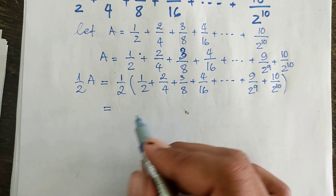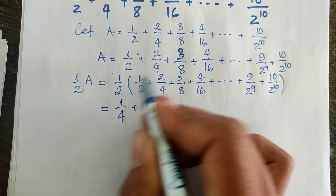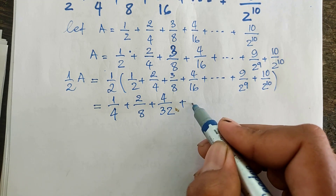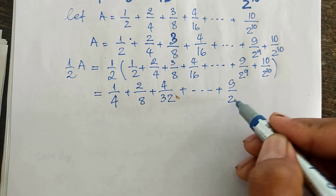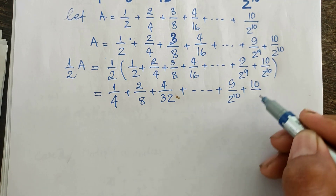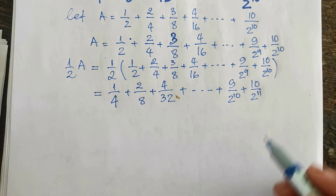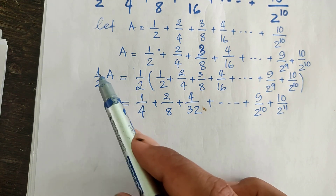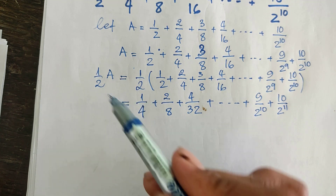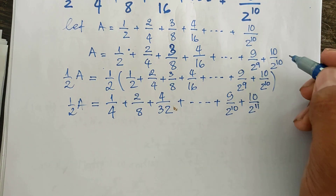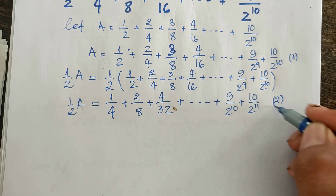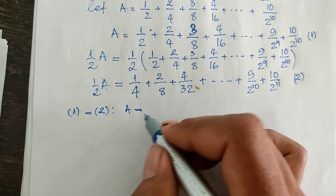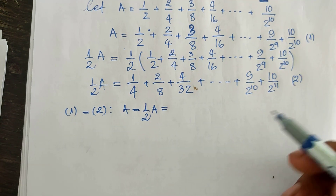The result of (1/2)A equals 1/4 + 2/8 + 4/32 + ... + 9/2^10 + 10/2^11. Now I take A minus (1/2)A. So now I subtract the second equation from the first equation.